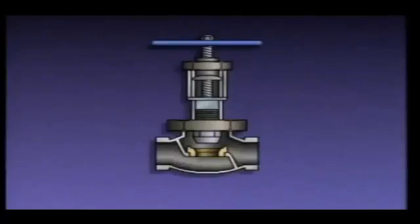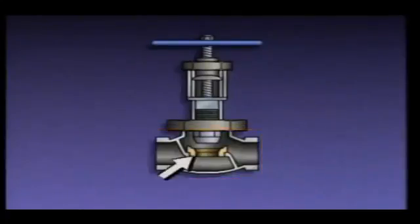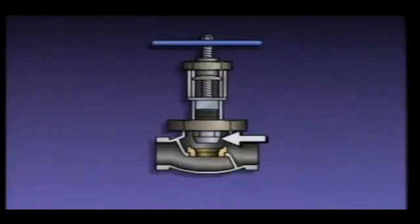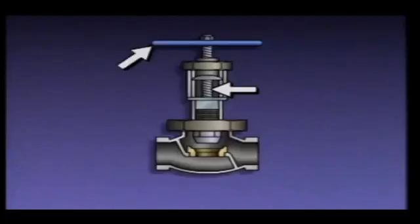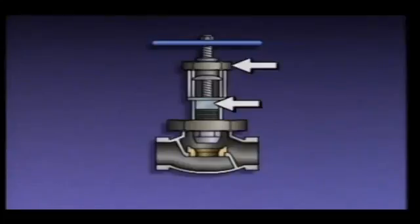A globe valve consists of a globe-shaped valve body, a seating area or seat, a bonnet, a disc, a stem with a hand wheel attached to it, a stuffing box, packing, and a packing gland with a gland nut.